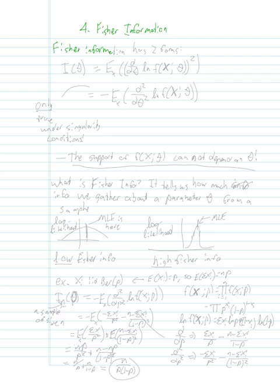Okay, so Fisher information has two forms. You write I of theta, theta is a parameter, is equal to the expected value, we're taking the expected value with respect to X, of the derivative with respect to theta times the natural log of our PDF. Now, take everything on the inside of that expected value, square it.